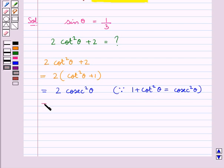Or you can say this is equal to 2 upon sin²θ since we know that sin θ is equal to 1 upon cosec θ. So cosec θ would be equal to 1 upon sin θ.